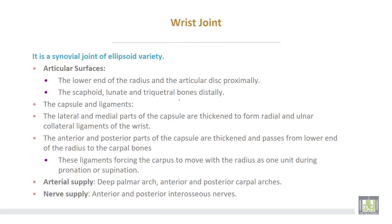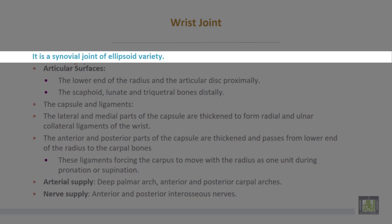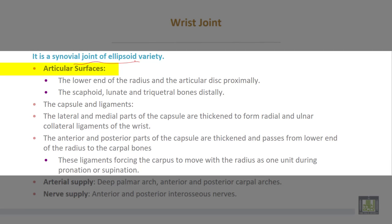The wrist joint is a synovial joint of ellipsoid variety. Articular surface: the lower end of the radius and the articular disc proximally; the scaphoid, lunate, and triquetral bones distally. The capsular ligaments: the lateral and medial parts of the capsule are thickened to form the radial and ulnar collateral ligaments of the wrist. The anterior and posterior parts of the capsule are thickened and pass from the lower end of the radius to the carpal bones. These ligaments force the carpus to move with the radius as one unit during pronation or supination.